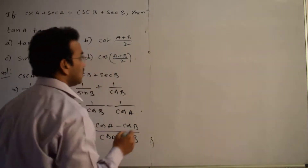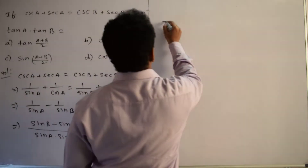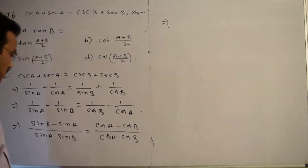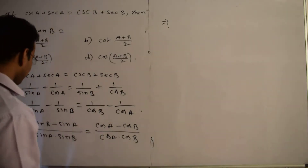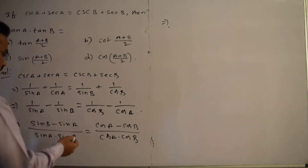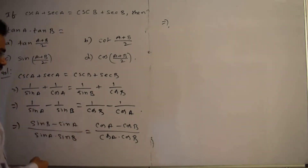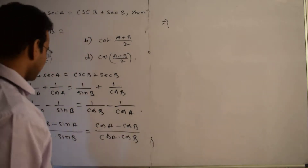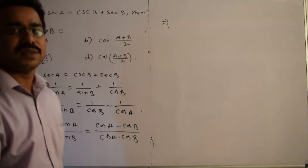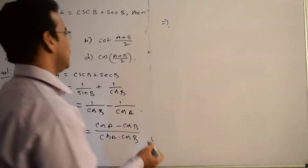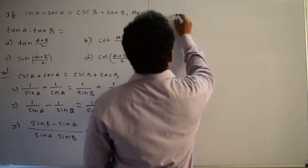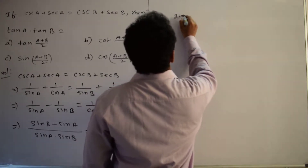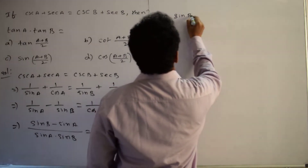In the next step, we cross multiply. We write (sin B minus sin A)/(cos A minus cos B) on one side and (sin A · sin B)/(cos A · cos B) on the right hand side.